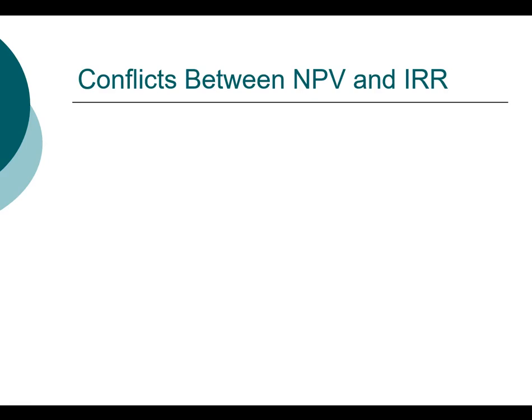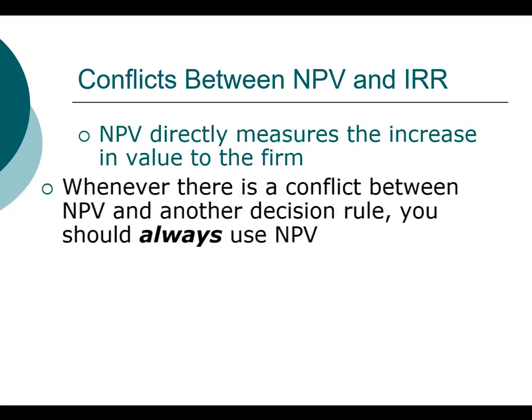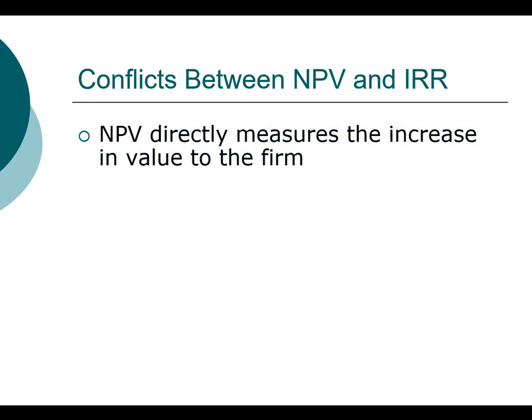In this video we're going to dive deeper to understand the differences between the net present value method and the internal rate of return method. The net present value method directly measures the increase in value to the firm — this is a dollar value. In a perfect world, the change in net present value that a firm is able to generate from a project should directly be reflected in its increase in stock price. Of course there are more nuances in the real world with information asymmetry, so investors don't know all the information that managers know. But in theory, the net present value is the method that tells us exactly how much more valuable a firm will become if it undertakes the project.